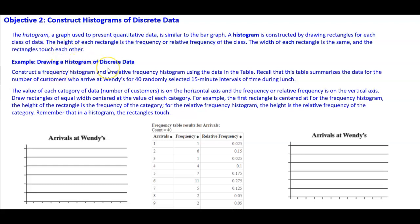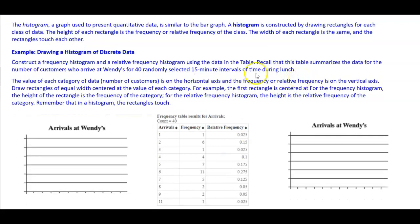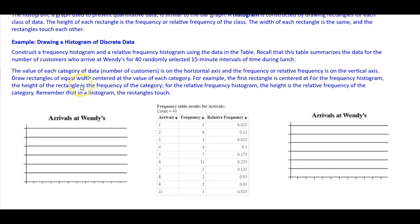For example, drawing a histogram of discrete data. To construct a frequency histogram and a relative frequency histogram using the data in the table from the previous example — recall that this table summarizes the data for the number of customers who arrive at Wendy's for 40 randomly selected 15-minute intervals during lunch. The value of each category, the number of customers, is on the horizontal axis, and the frequency or relative frequency is on the vertical axis.